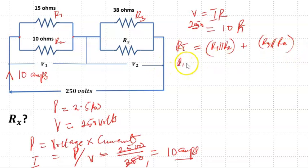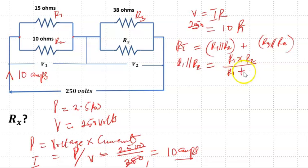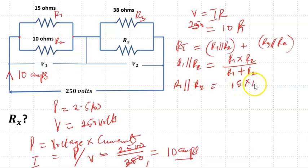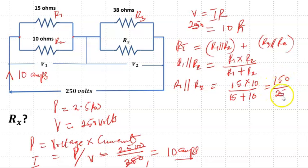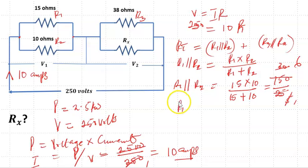First, let's solve for R1 and R2 in parallel. The formula for two resistors in parallel is R1 times R2 over R1 plus R2. So R1 parallel R2 equals 15 times 10 over 15 plus 10, which is 150 over 25, giving us 6 ohms.